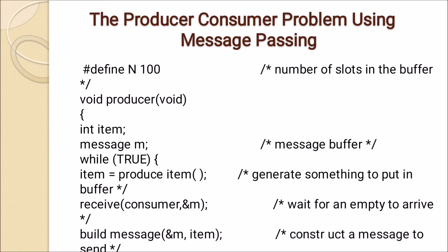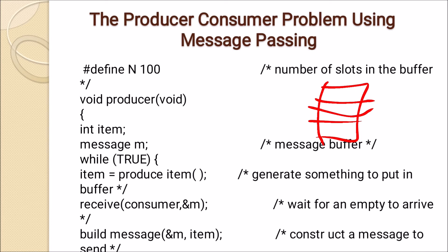This is the algorithm for solving the producer-consumer problem using message passing. There is one common buffer in which producers put their items and consumers consume items from that buffer. The buffer has a fixed number of slots. Here we define variable n = 100, which represents the number of slots in the buffer.